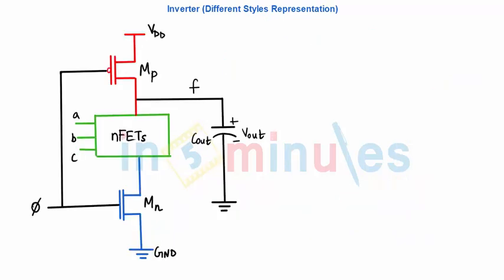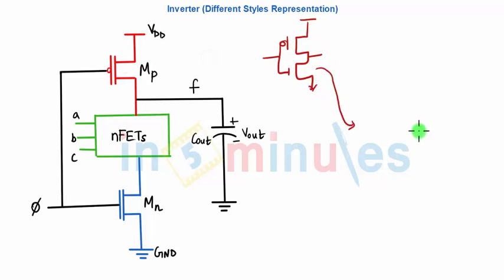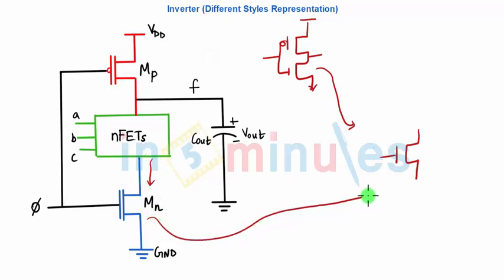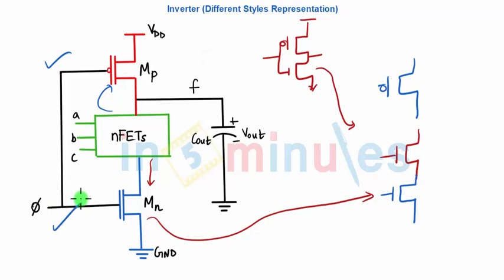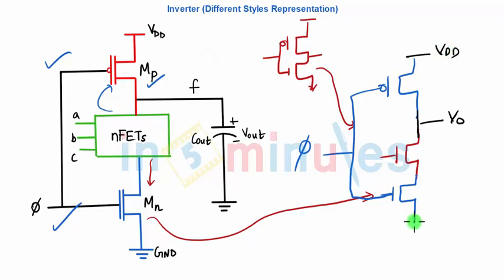Let's quickly go ahead and see the dynamic style. Let's make the standard diagram — a CMOS inverter, PMOS and NMOS. The NMOS logic is the same as static CMOS. Beyond the NMOS logic there is a footer transistor, and above the NMOS logic there is a header transistor which is a PMOS. The header and footer transistors both have their inputs shorted, called phi. The output is taken in between the PMOS header and NMOS logic. This is my VDD, this is my ground, and this is my input A.